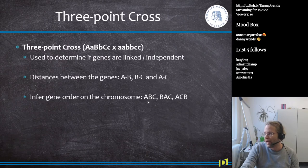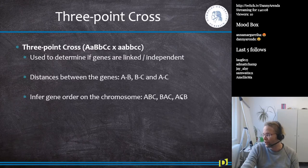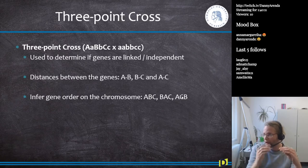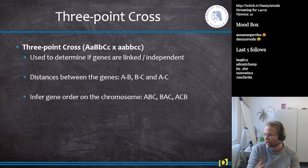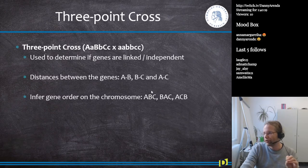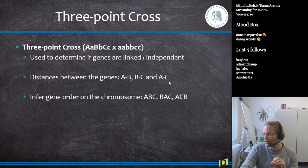By knowing these three distance measurements, we can infer the order of the genes on the chromosome — whether it's A, B in the middle, C at the end; or B at the beginning, A in the middle, C at the end; or A at the beginning, C in the middle, B at the end. So we can make an ordering and start building up a genetic map. Using a three-point cross, you can determine not just the distances but also the order.